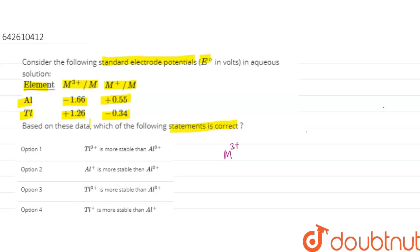M3+ to M, when the metal is going from M3+ to M, and here are the elements: aluminum, thallium.